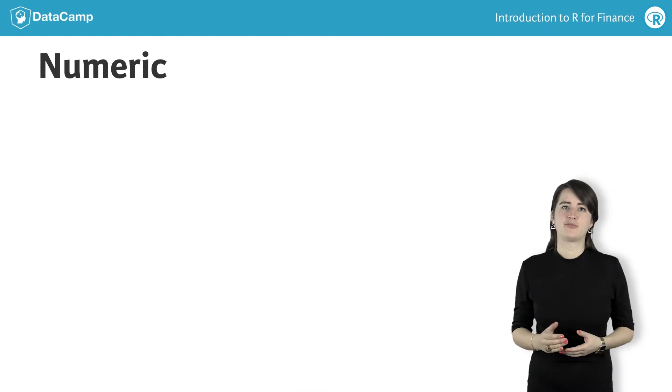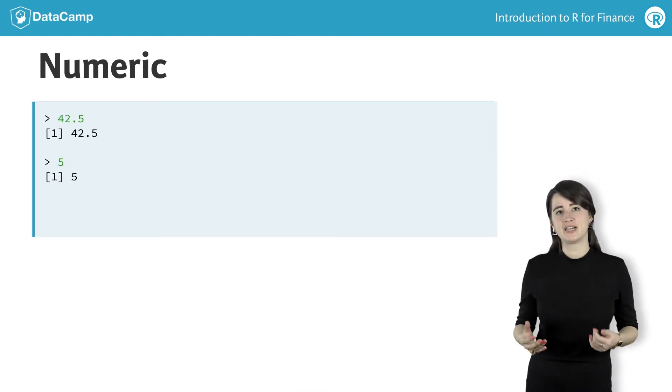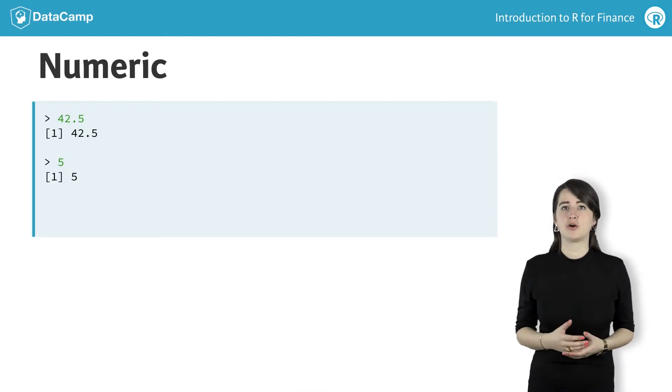Numeric data are decimal numbers like 42.5. Numeric data could be a stock price, cash flow, or income.